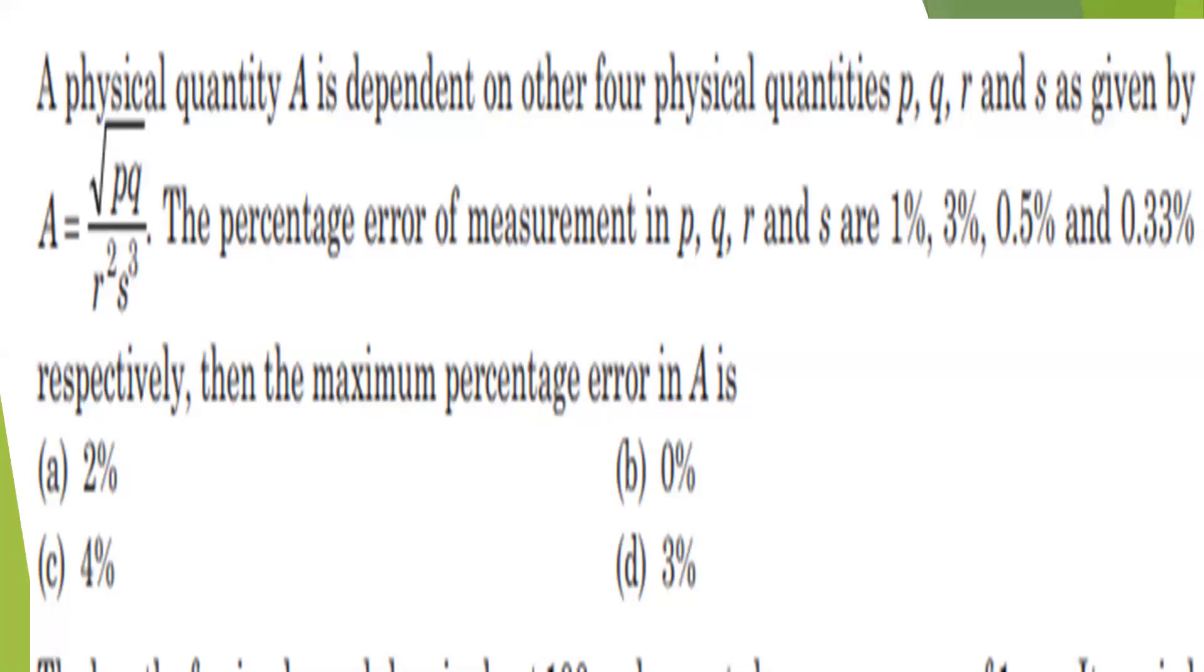Please note that whenever this type of expression has powers, the percentage errors will be multiplied with that number and all errors will get added. Square root of PQ is there. What is the power of P? One-half. What is the power of Q? One-half. So write one-half within brackets times 1. Then one-half within brackets times 3. Even though powers are in the denominator, error would be added. Whatever the power is there, that power multiplies the percentage of error.